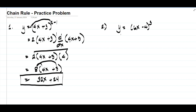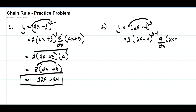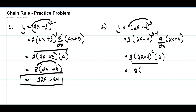On example number two, we have y equals quantity 6x minus 4 raised to 3. Bring down the 3, write 6x minus 4 raised to 3 minus 1, which is 2, then multiply by the derivative of 6x minus 4, that is 6. So 3 times 6 is 18 times quantity 6x minus 4 squared.